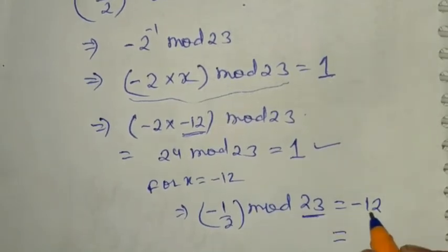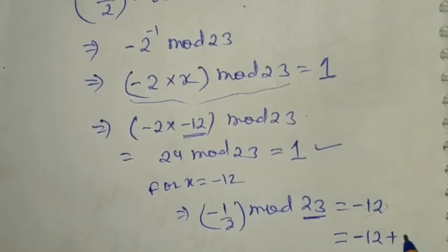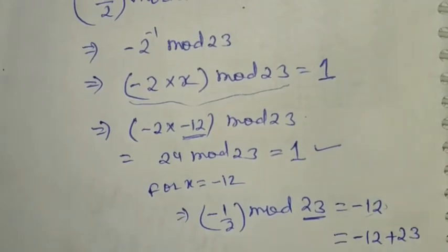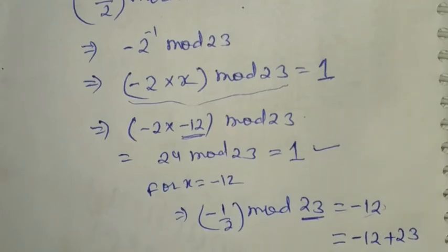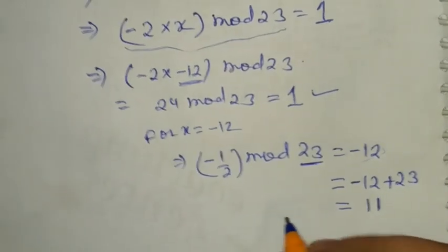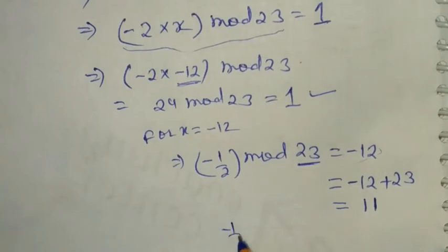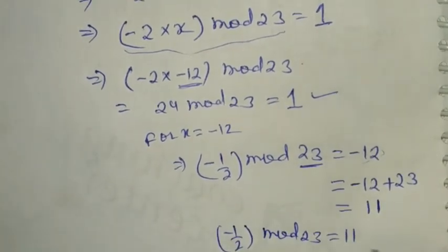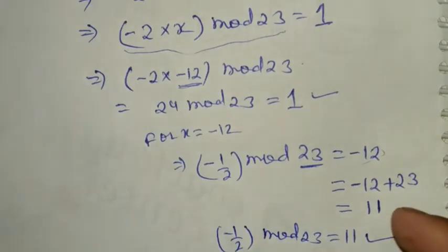In order to make this positive, we write minus 12 plus 23 mod 23, which is 11. So we can say that minus 1 by 2 mod 23 is 11. That's it.